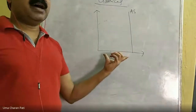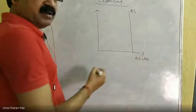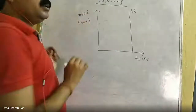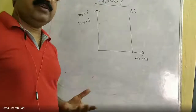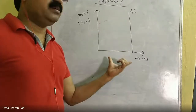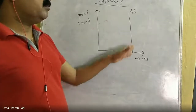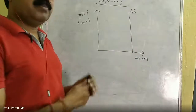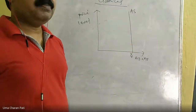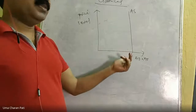In the AD-AS framework, price is on the vertical axis and output on the horizontal axis. In the classical theory, since total output is a constant — not a variable — the aggregate supply curve is a vertical straight line at full employment output YF. This is called full employment equilibrium. Given this, output is out of the purview of analysis. What is not decided is the price level — the vertical axis remains open.